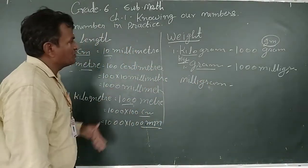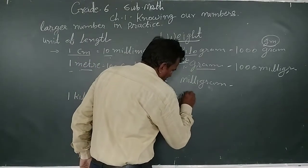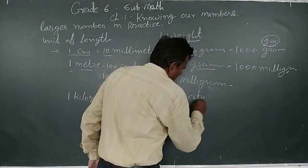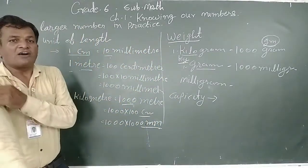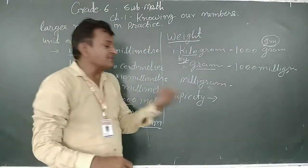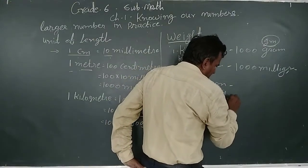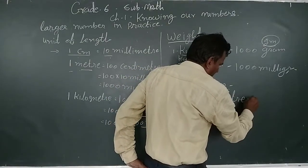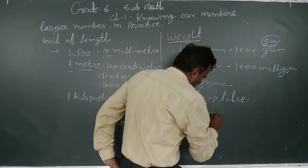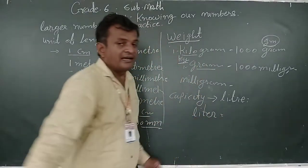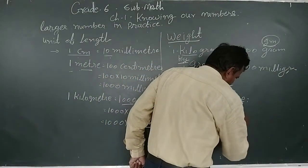Next we learn capacity. Capacity means the measurement of liquid — how we measure liquids. We measure liquid in liters. 1 liter contains 1000 milliliters.